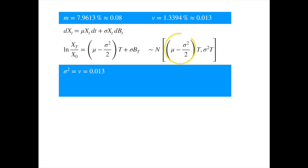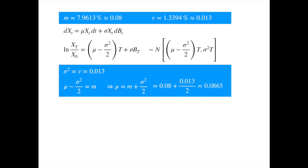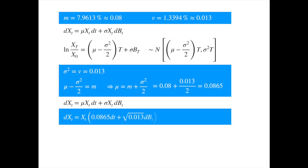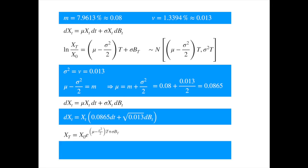Setting the mean of the geometric Brownian equal to the empirical mean of the log returns and solving for mu, we get the drift estimate. Substituting the drift and the standard deviation into the geometric Brownian SDE, and substituting the drift and the variance into the solution of the SDE, we get the calibrated process. Whilst the parameter estimation process looks simple, it can be shown that this approach is consistent with the ordinary least squares and maximum likelihood approaches, as demonstrated in the previous video.